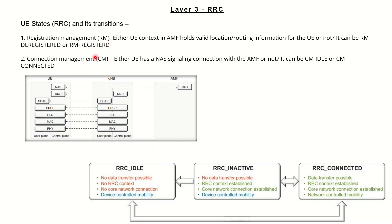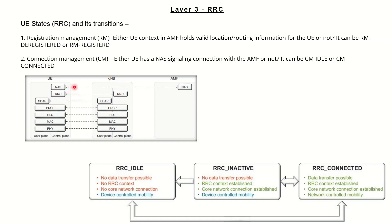In idle mode, the two scenarios are RM deregistered and CM idle mode, where there is no connection between the user and the core network. No data transfer is possible, no RRC context is enabled, and no core network connection is present. All mobility — the user moving from one cell to another — is handled by the UE itself by taking SIB information from the gNodeB in the downlink.